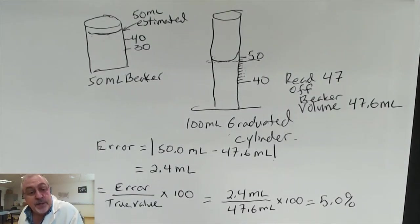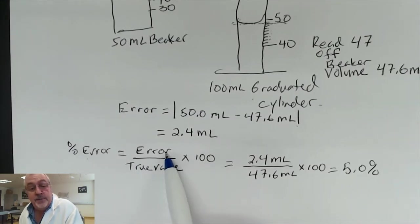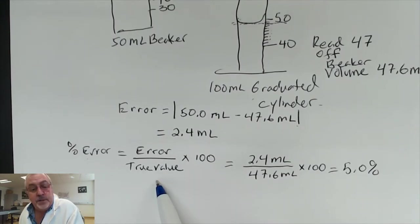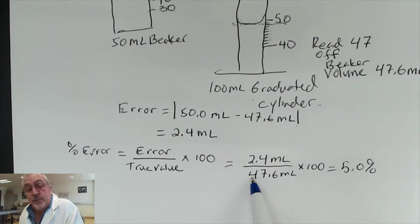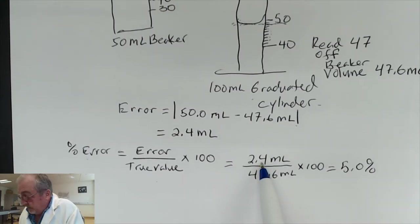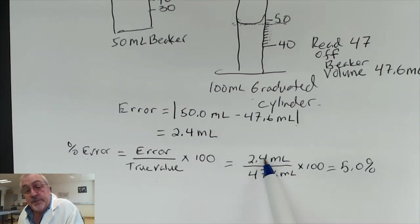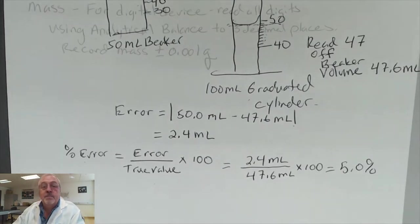We ended up with an error of 2.4 mL. Since we take the absolute value, we don't care whether it was under or over 50 — we just want to know the size of the error. Percent error is the absolute value of the error divided by the true value, times 100. The true value measured was 47.6, the error was 2.4 — that gives 5%. We have two sig figs in the error and three in the true value, so the answer has two sig figs.